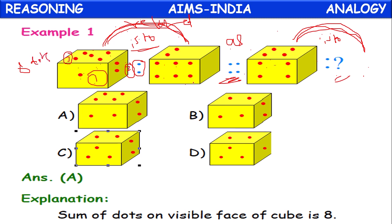In the second picture also there are eight dots. So in pictures one and two, we have eight dots each. In the third picture also there are eight dots. According to this relation, the fourth picture should also contain eight dots. So the sum of the dots on the visible faces of the cube is eight in all cases.